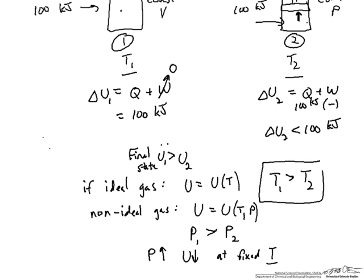To compensate for that, the temperature must be higher, because as we increase temperature we increase internal energy. So it's not the case that if we have a non-ideal gas that that ultimately affects our conclusion. We still find that T₁ is greater than T₂.